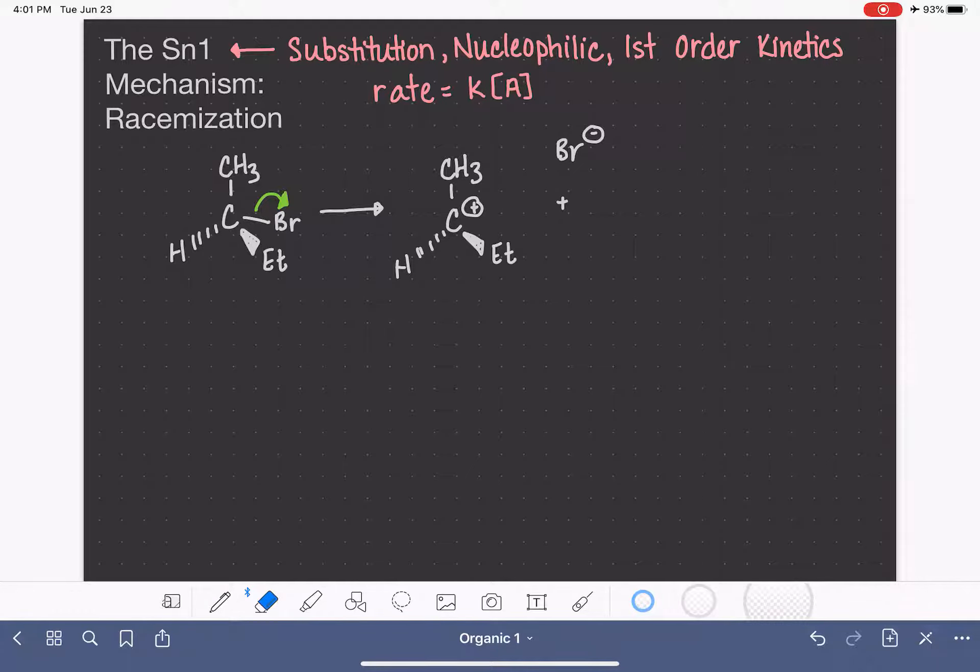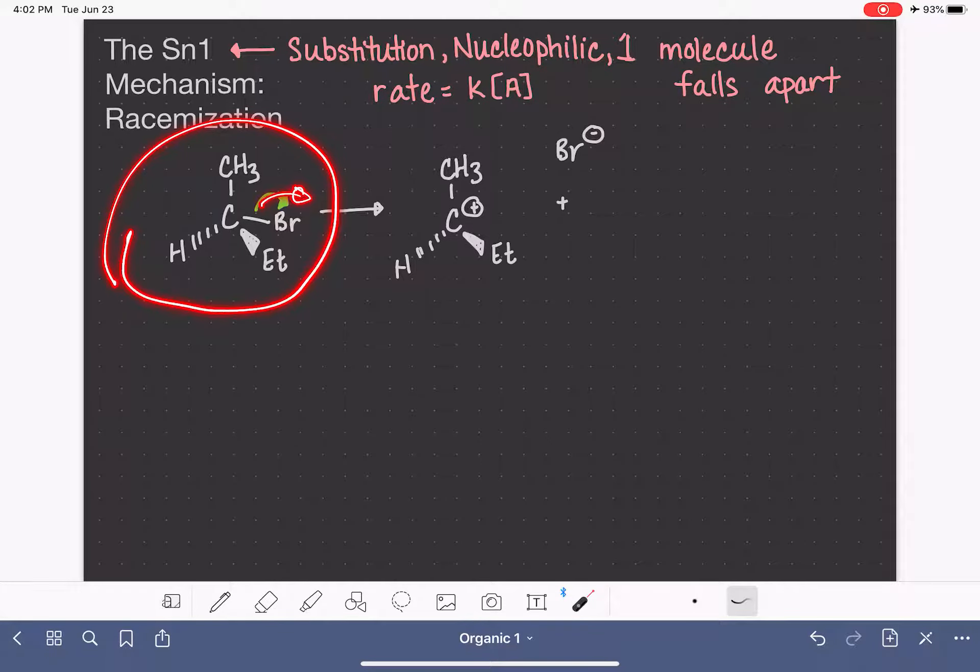It's not uncommon for our students to get tripped up or confused in remembering first-order kinetics. So I have a trick to help you remember. Instead of thinking of this as first-order kinetics, think of it as one molecule falls apart. In the SN1 reaction, the reaction starts by one molecule just falling apart, turning into a carbocation.